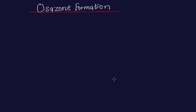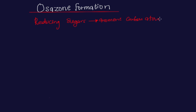In this video I'm going to talk about Osazone formation. Osazone is actually an intermediate that is formed whenever phenyl hydrazine in an acidic medium is boiled with reducing sugar. Reducing sugars are sugars with a free anomeric carbon atom, or simply they are sugars that have a free aldehyde or ketone functional group. That's basically what reducing sugar is.